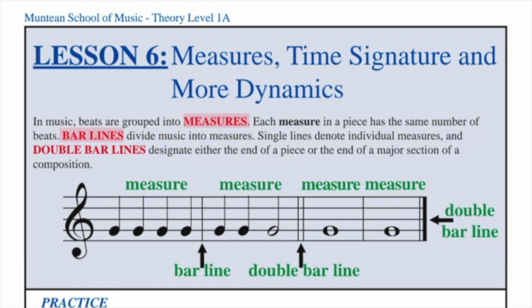It is illustrated below. We have a bar line here, which creates a measure. We have another bar line here, which creates another measure. Single lines denote individual measures.